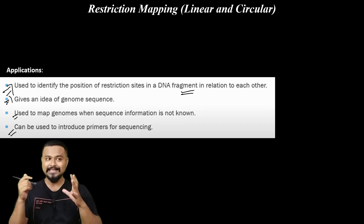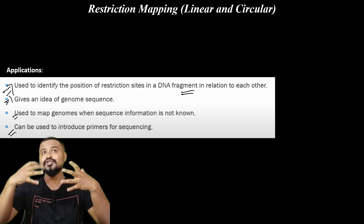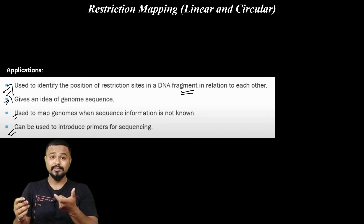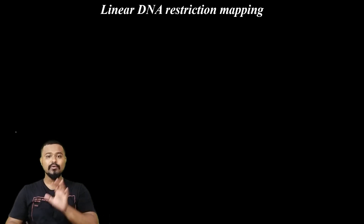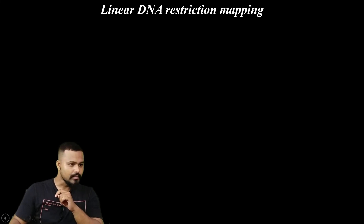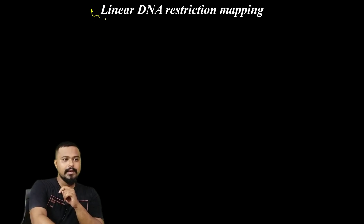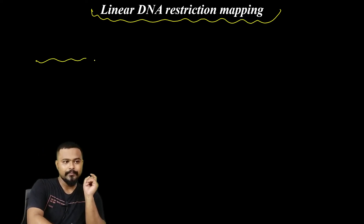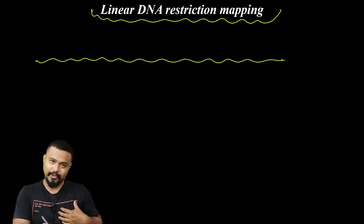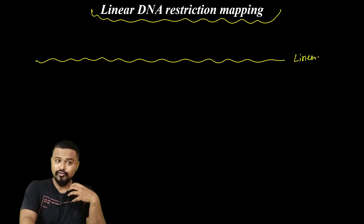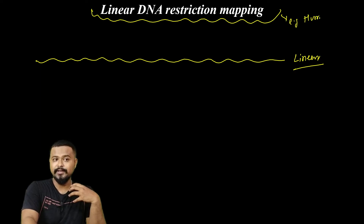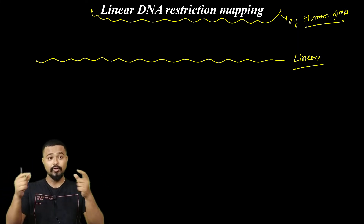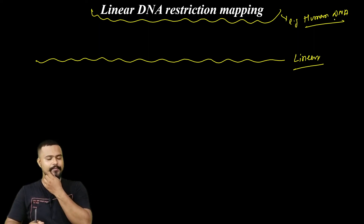The application uses both linear DNA and circular DNA for restriction mapping. This is the concept of linear DNA. For example, our human DNA is linear. Circular DNA is different — bacteria have circular DNA. Human DNA is linear, and linear DNA has restriction enzyme cut sites along its length.